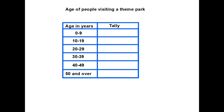So instead what we have decided to do is to group people's ages. On the first line we are going to look at people from the age of nothing up to nine year olds. The second group covers ages 10 to 19, then 20 to 29, all the way up to 49, and then we're going to group everyone age 50 and over into one group.